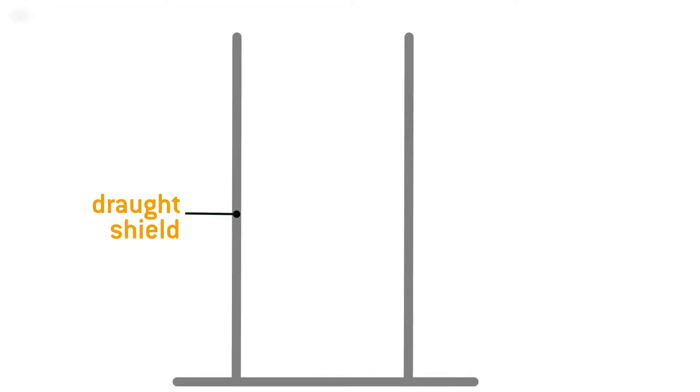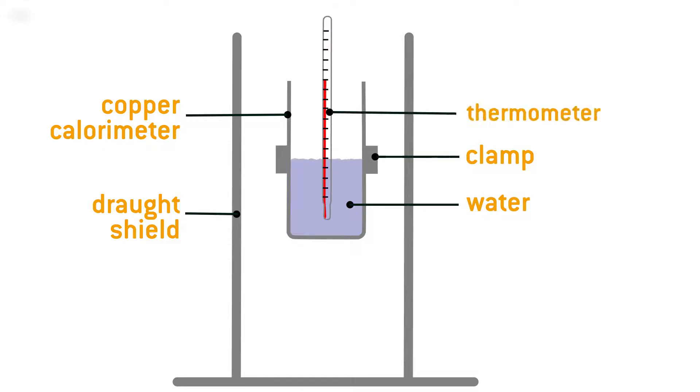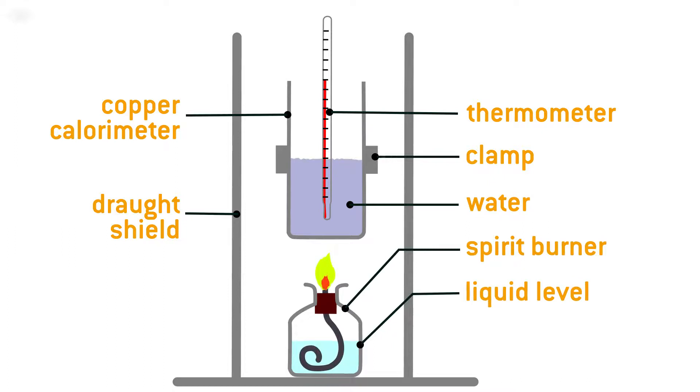Alcohols can be used as a fuel in a spirit burner. The heat released upon combustion of an alcohol can be measured by a simple calorimetry experiment and used to calculate the enthalpy change of combustion of the fuel.